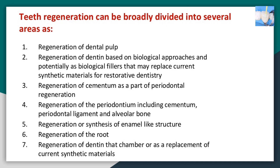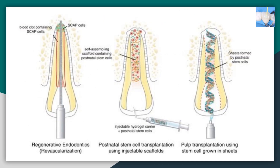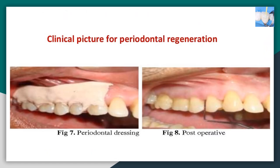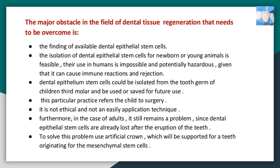Areas for teeth regeneration include: regeneration of dental pulp; regeneration of dentin using biological approaches, potentially as biological fillers to replace current synthetic materials for restorative dentistry; regeneration of cementum as part of periodontal regeneration; regeneration of the periodontium including cementum, periodontal ligament, and alveolar bone; regeneration or synthesis of enamel-like structure; and regeneration of the root and dentin chamber.